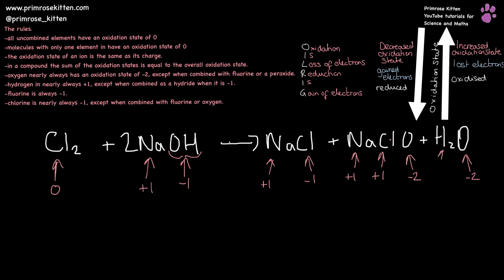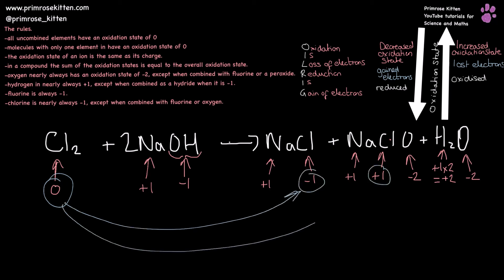Oxygen is minus two. Hydrogen is plus one; there are two of them giving an overall contribution of plus two. So if we look at what's changed: chlorine has gone from zero to minus one and plus one. When going from zero to minus one it has decreased its oxidation state — it has gained electrons, so it is being reduced. When going from zero to plus one it has increased its oxidation state — it has lost electrons, so it has been oxidized. So in this example, this is a disproportionation reaction because chlorine has been both reduced and oxidized in the same reaction.